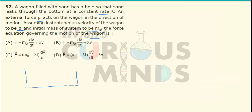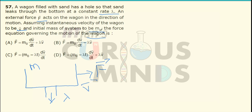Assume this is a wagon of initial mass m₀, and after a certain time let its mass be equal to m. There is a force acting in this direction, and there is a hole at the bottom which releases sand at a rate of lambda. We have to calculate the force equation in this direction, and at any point the velocity is equal to v vector.